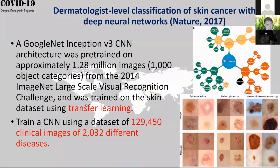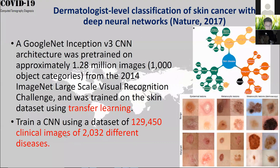After training this CNN, they take the trained model — this is called transfer learning — and retrain it using a dataset of clinical images. This clinical dataset contains over 2,000 different disease classifications. Based on images of the lesion area, you try to classify what kind of disease it is.